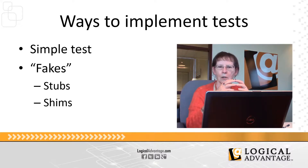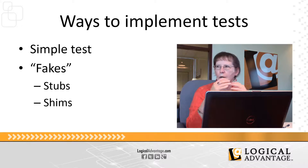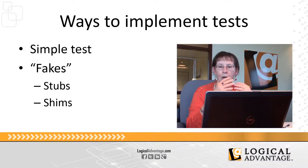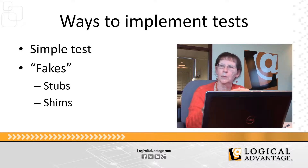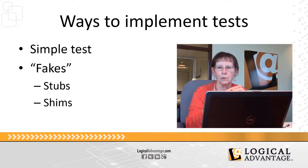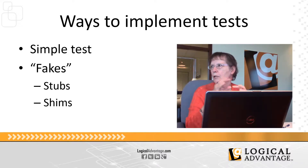Stubs are something you would use for your internal code where you have access to the code itself. Stubs only work on interfaces, so basically you would implement the interface as a dummy object. Shims are a similar concept, but you use those against DLLs — like the .NET framework or a third-party assembly that you can't change the code, but you need to be able to access it in some way.